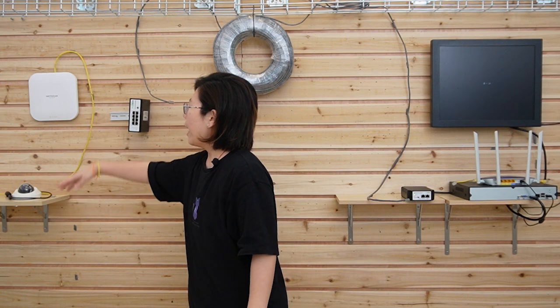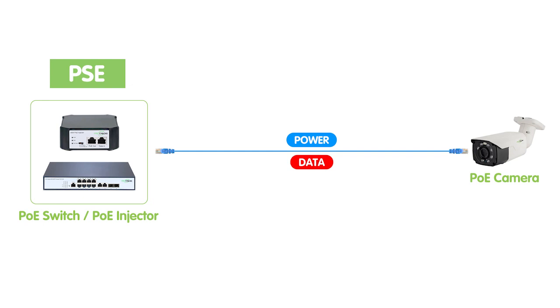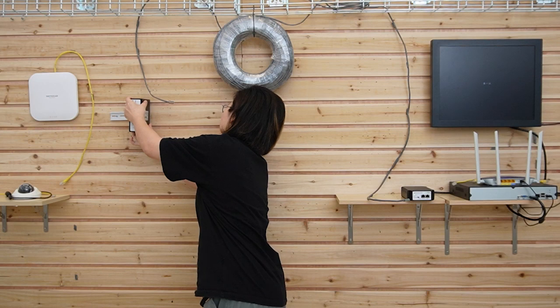Now we're in front of the board and we're connecting an IP camera and a wireless access point using the PoE power switch and a PoE injector. A PoE power switch is a network switch that receives its power from a PoE source, like a PoE injector or PoE switch, and it can provide both data connectivity and electrical power to PoE-enabled devices connected to its ports. It also provides flexibility in device placement, centralized power management, and scalability.